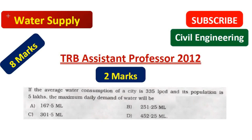If the average water consumption of your city is 335 litres per capita per day and its population is 5 lakhs, the maximum daily demand of water will be. Maximum daily demand is equal to 1.8 times the average daily demand.